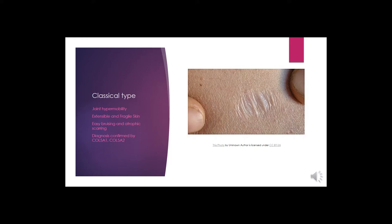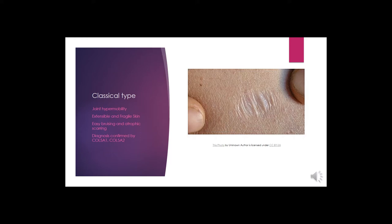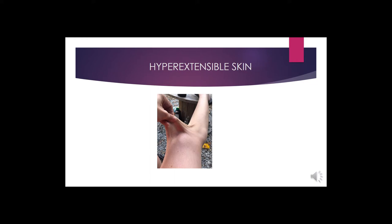The classical EDS type features generalized joint hypermobility along with extremely hyperextensible and fragile skin, easy bruising, and atrophic scarring — a very paper-like, thin scar. This type can be confirmed by genetic testing of COL5A1 and COL5A2. A picture demonstrates the extremely hyperextensible skin characteristic of a classic Ehlers-Danlos patient.